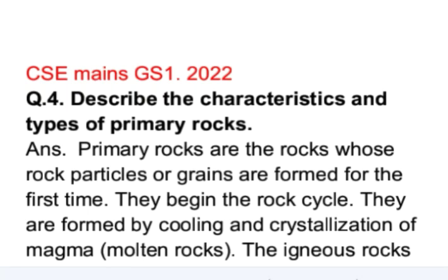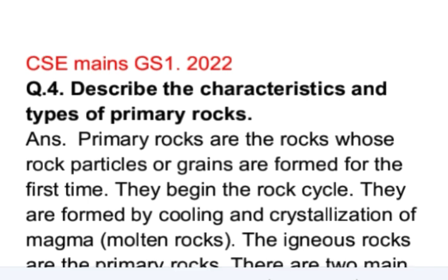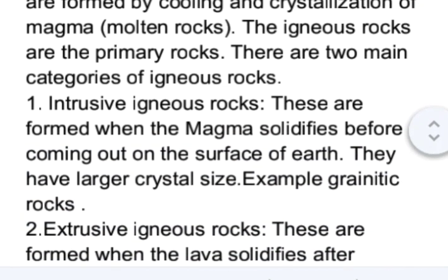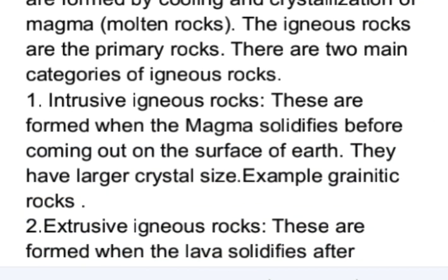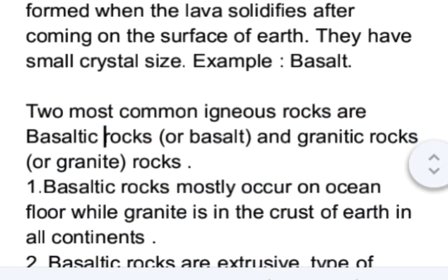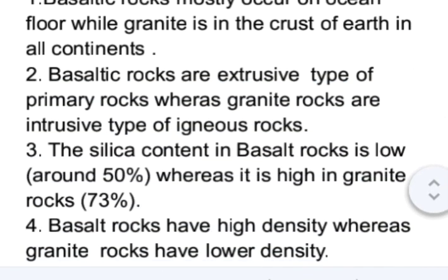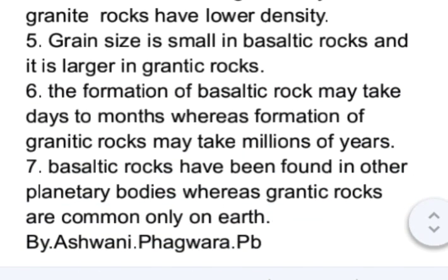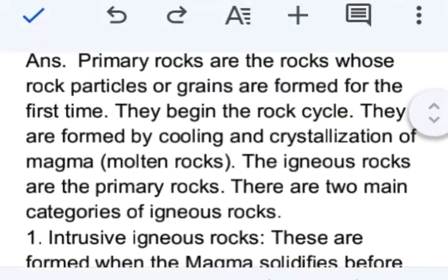This is question number 4 from GS paper 1 of May's 2022 examination. The question is: describe the characteristics and types of primary rocks. In the answer, first we will define what primary rocks are, then the two categories of primary rocks, which are intrusive and extrusive igneous rocks, and then the two most common types — basaltic rocks and granitic rocks — and finally their characteristics. Let's see the answer.